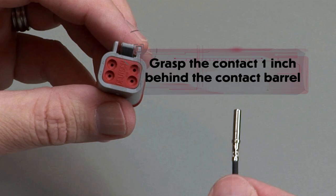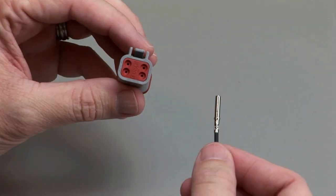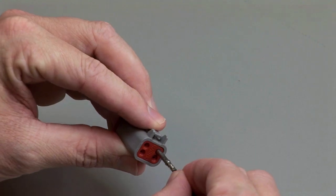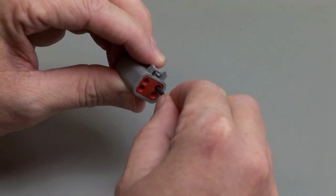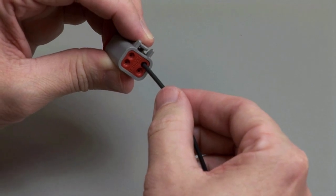Hold the connector with the rear grommet facing you. Push the contact straight into the rear grommet until you hear and feel a click. A slight tug will confirm that the contact is properly locked into place.